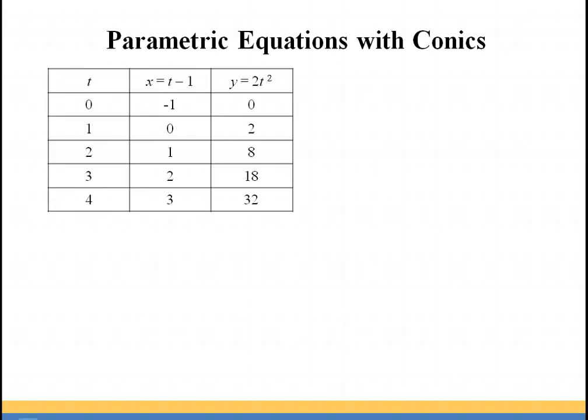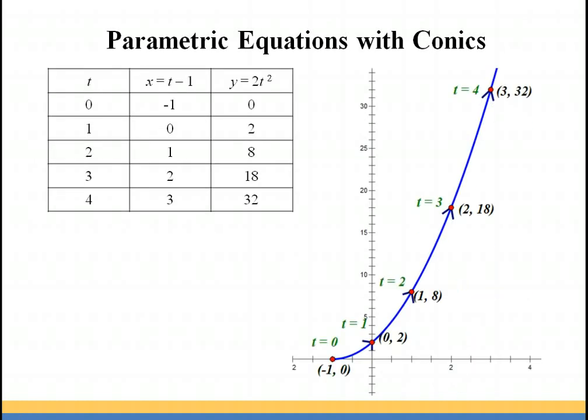Let's go ahead and plot these on a grid. So we have this as being the path of our object — the x coordinate is the horizontal movement, the y coordinate is the vertical movement, and the t value is the time at which it was at that particular position.